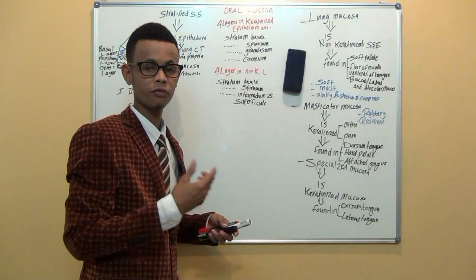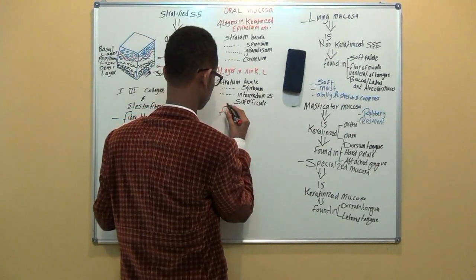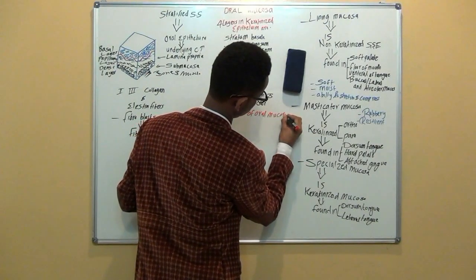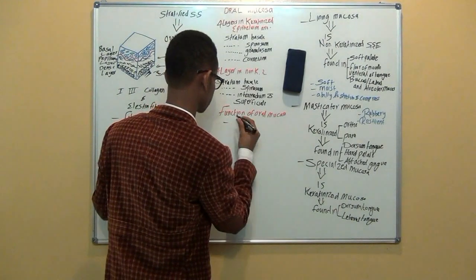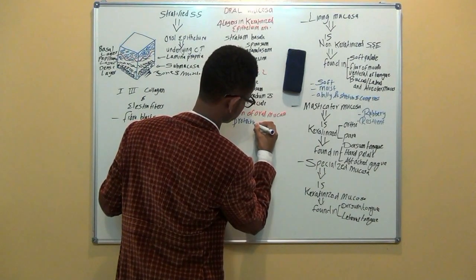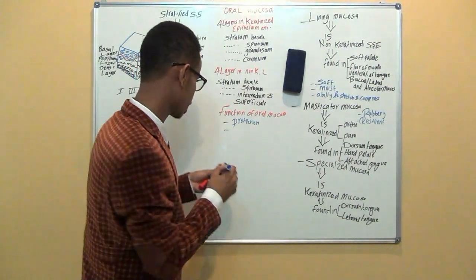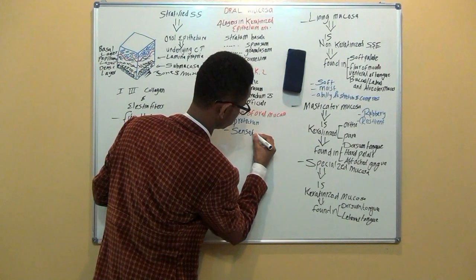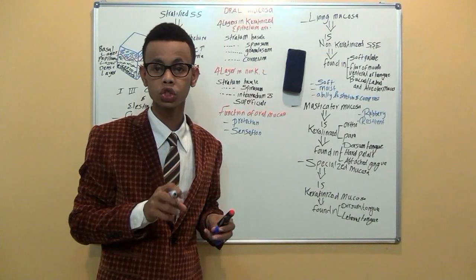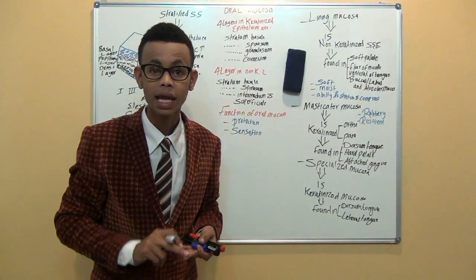Now I'm going to talk about the functions of the oral mucosa. The first one is protection — it acts as a barrier against microorganisms. The second one is sensation; there are receptors that respond to temperature, touch, pain, taste, and initiate reflexes such as swallowing, gagging, and salivation.